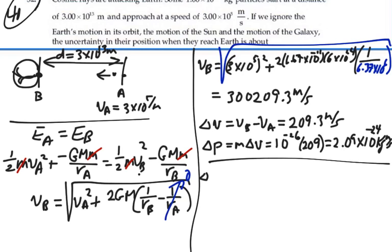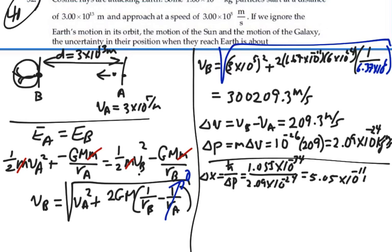So our uncertainty in position is going to be equal to H-bar over our uncertainty in momentum. So 1.055 times 10 to the minus 34, over 2.09 times 10 to the minus 24. And that's going to be equal to 5.05 times 10 to the minus 11 meters.